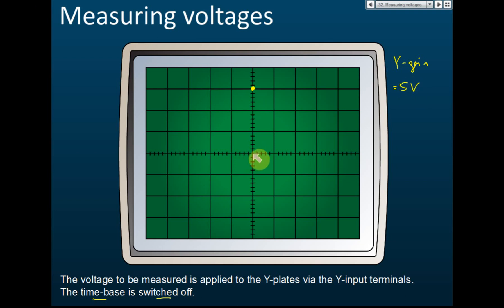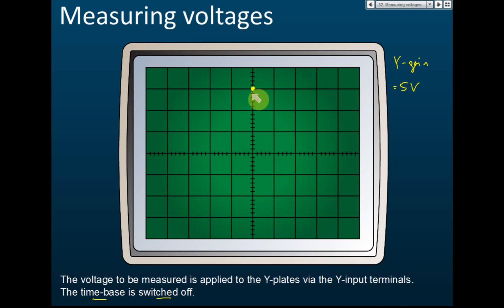Initially the spot is at the center. After plugging in the direct current the spot deflects. With a Y gain of 5 volts per division, each division represents 5 volts: so one division is 5V, two is 10V, three is 15V. The spot is now at 15 volts — that's the correct reading.